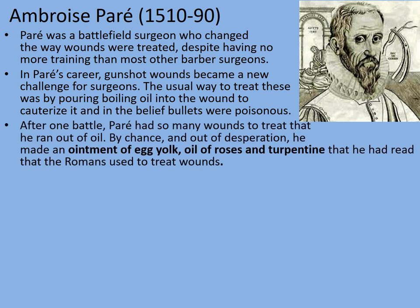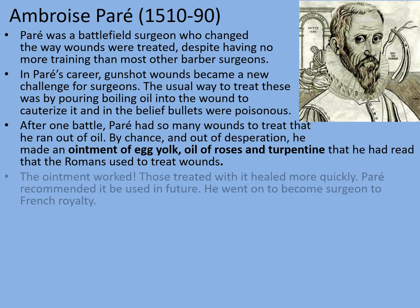After one particular battle, Paré had so many wounds to treat that he ran out of boiling oil. By chance and out of desperation, he made an ointment of egg yolk, oil of roses, and turpentine — a remedy he had read that the Romans had used. Paré didn't really expect it to work particularly well. However, the ointment worked: those treated with it healed more quickly, and Paré recommended it for future use.